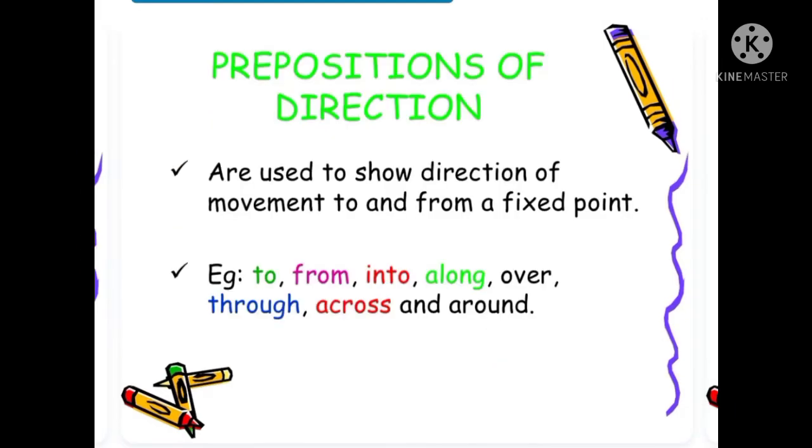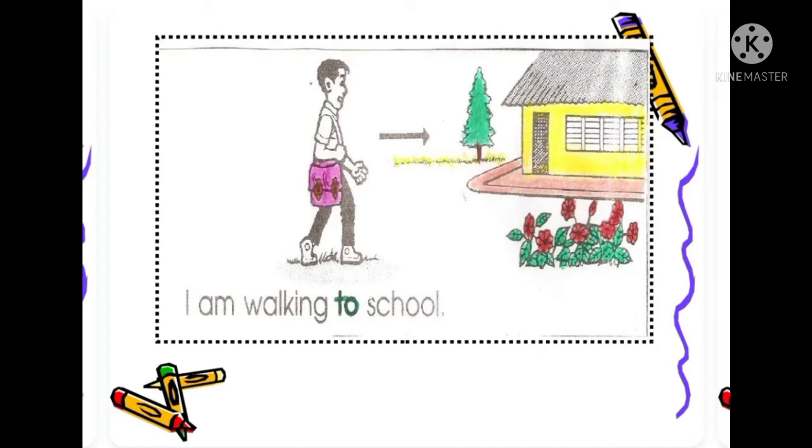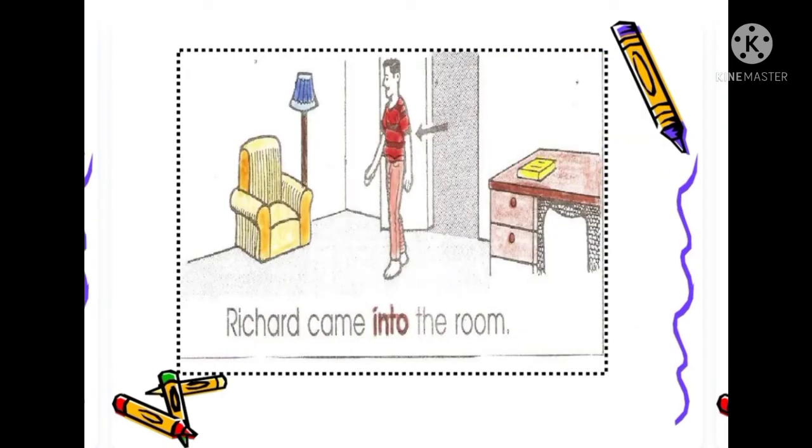Prepositions of direction are used to show direction of movement to and from a fixed point. Example: to, from, into, along, over, through, across, and around. Another example: I am walking to school. Richard came into the room.